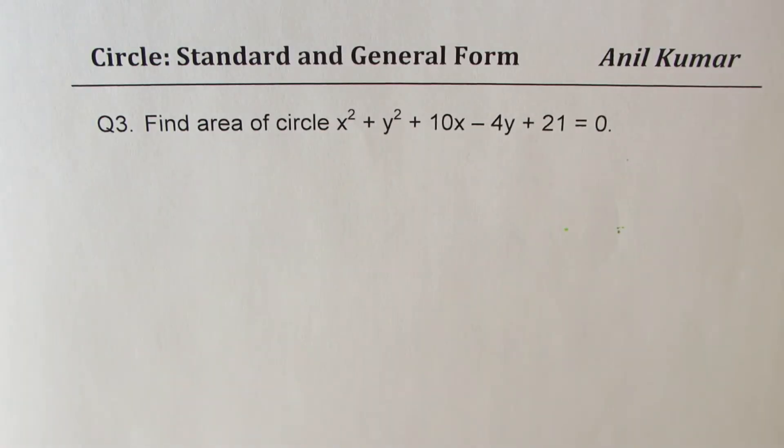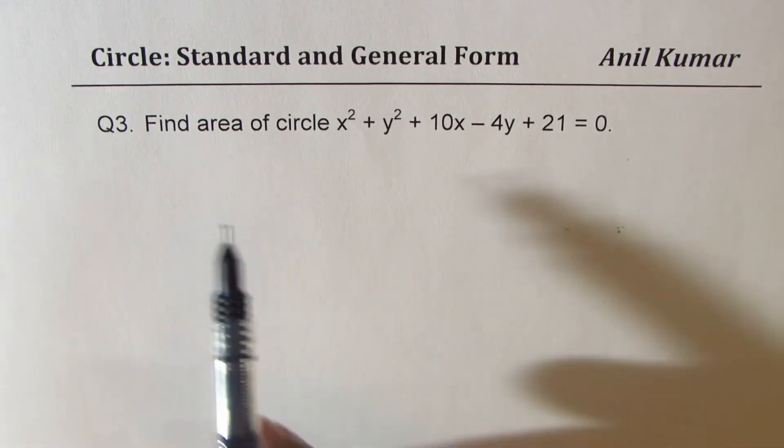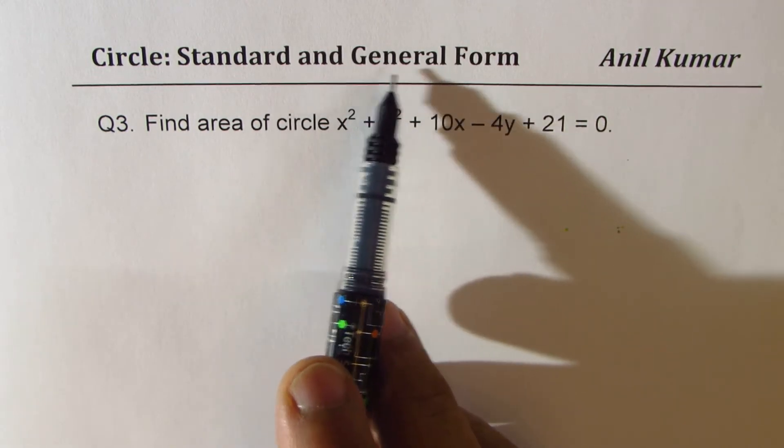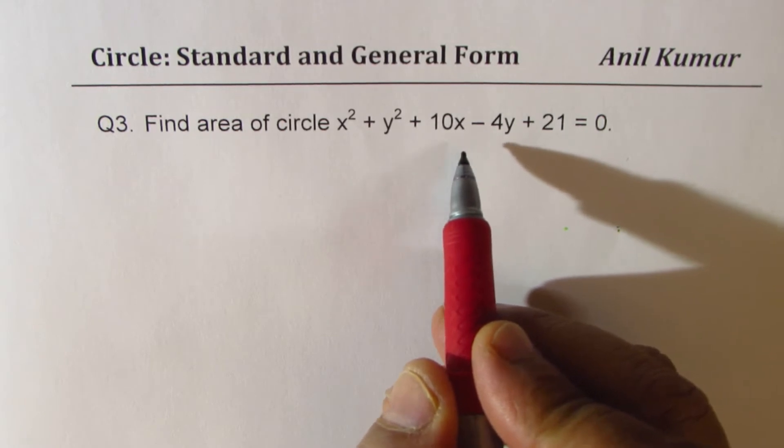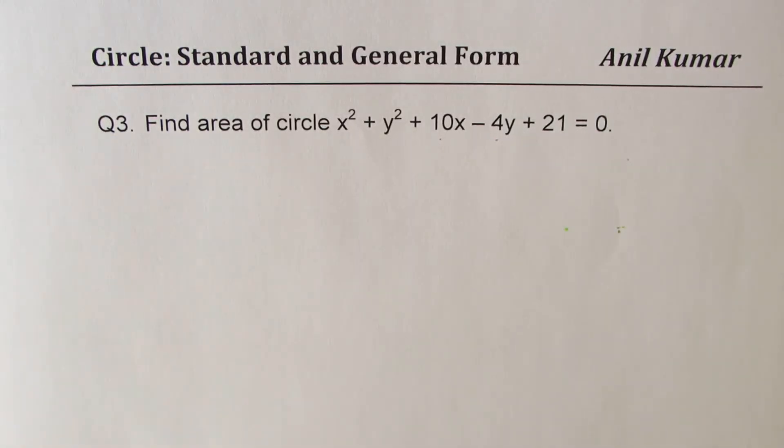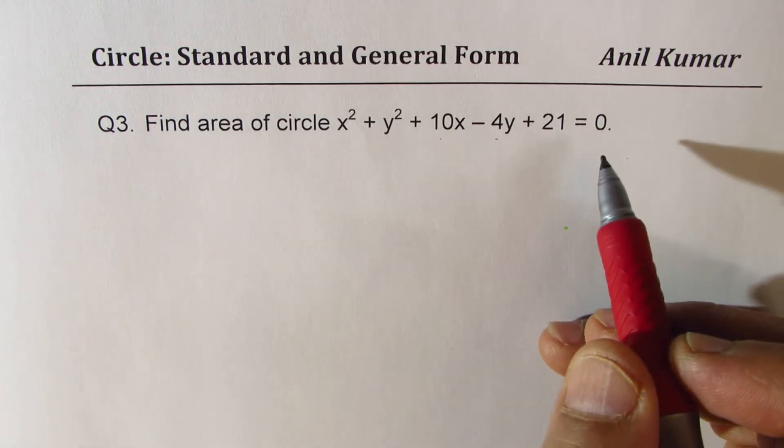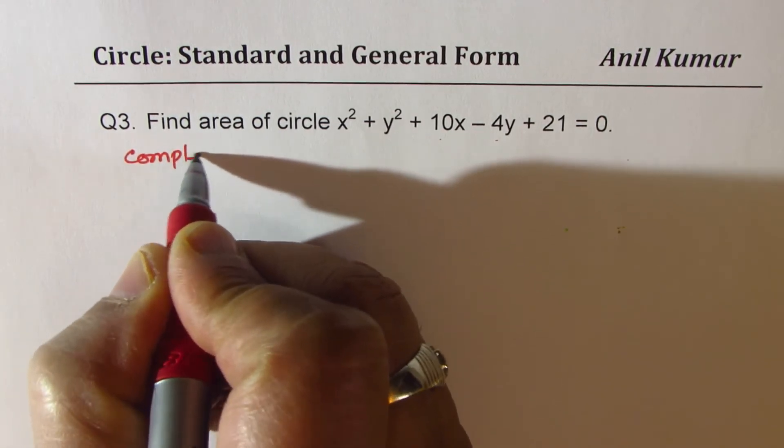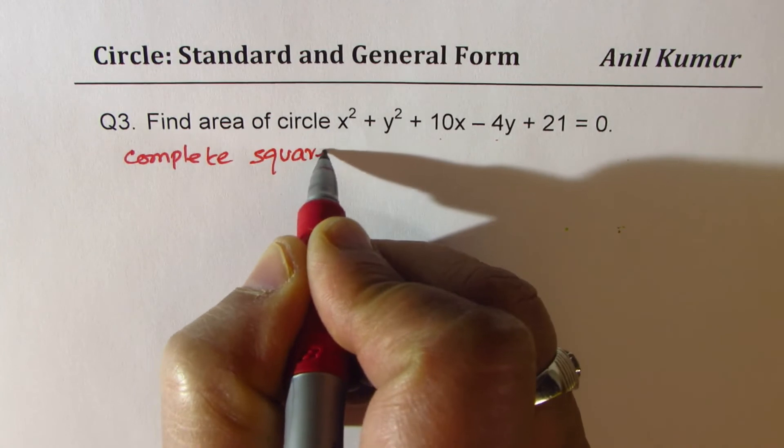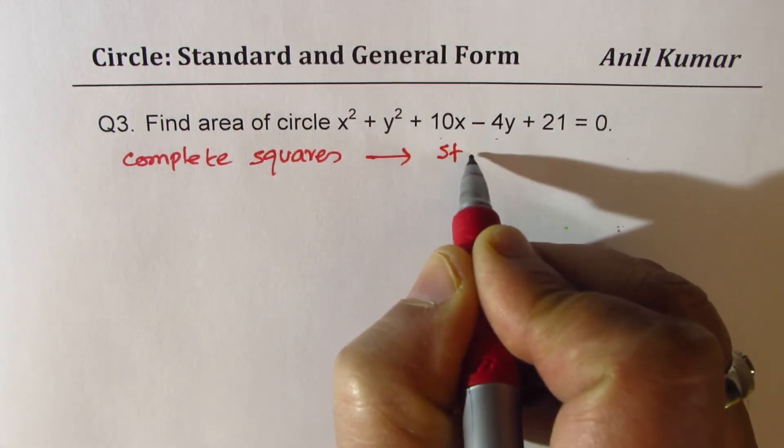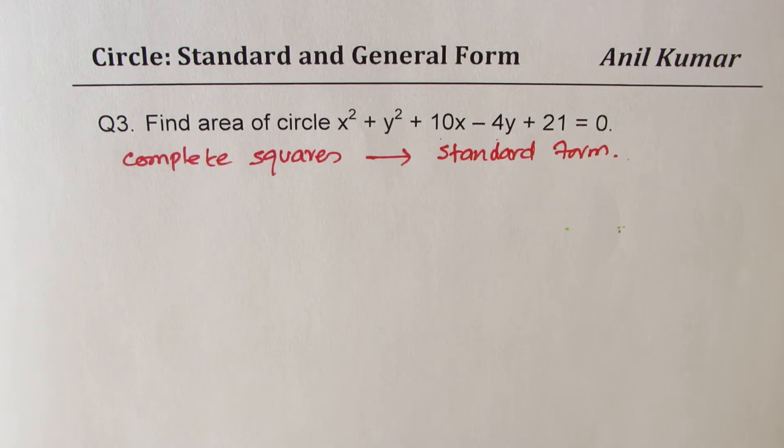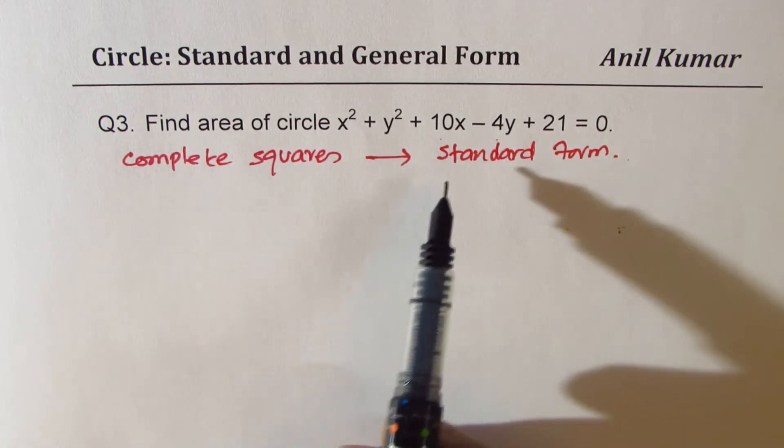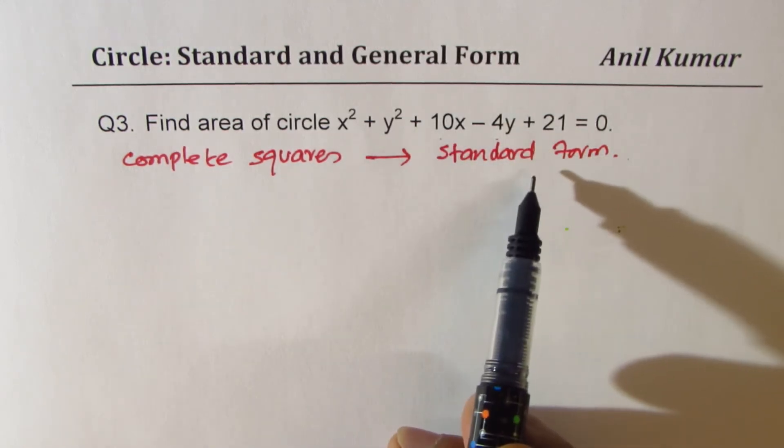Now let's move on to the last question, which is a very interesting question. Find area of the circle. Now this form is called the general form of a circle. Now we really can't say what the radius is and what is the center of the circle straight away. There are ways - half of this and half of this is related with the center point. But what we do here is we complete the squares and convert this to standard form.